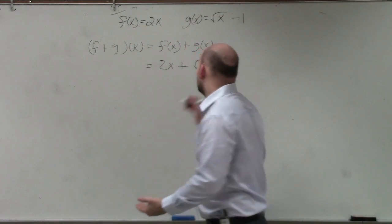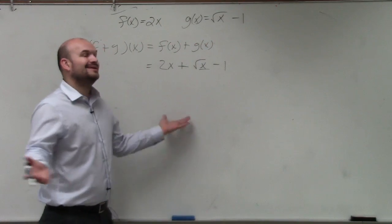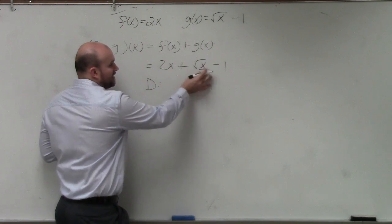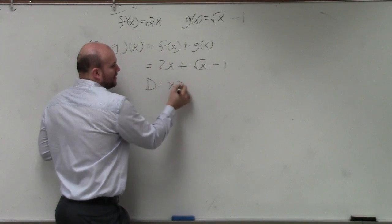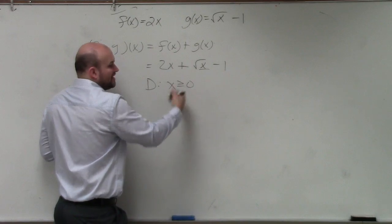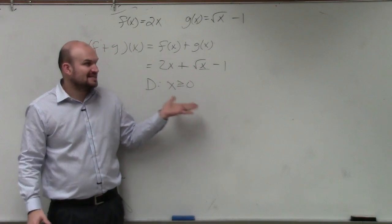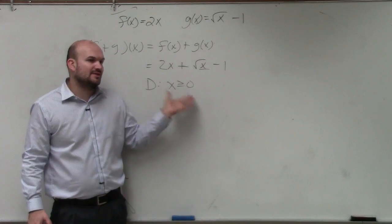So what we do is we take the whole expression under the radical. In this case, it's only x. So our domain is going to be our radicand greater than equal to 0. Well, that's already solved for x, so we're done. So the only restrictions on our domain is x has to be all numbers greater than or equal to 0.